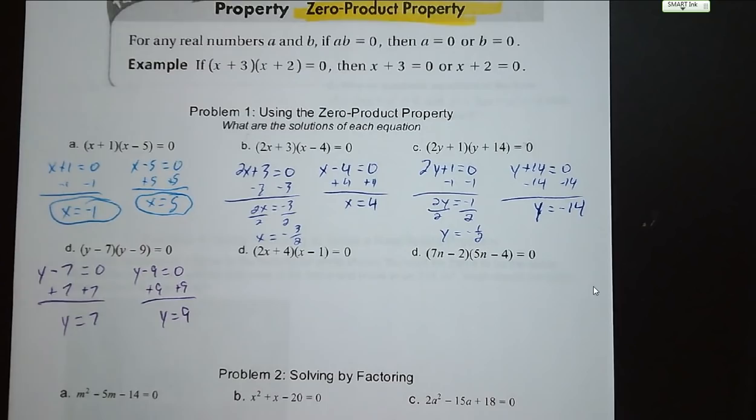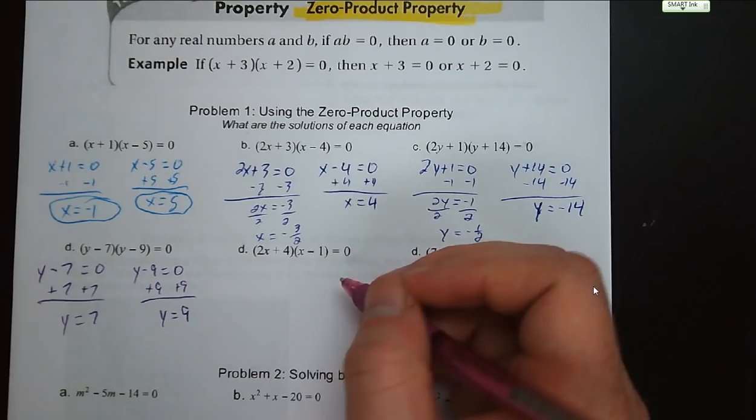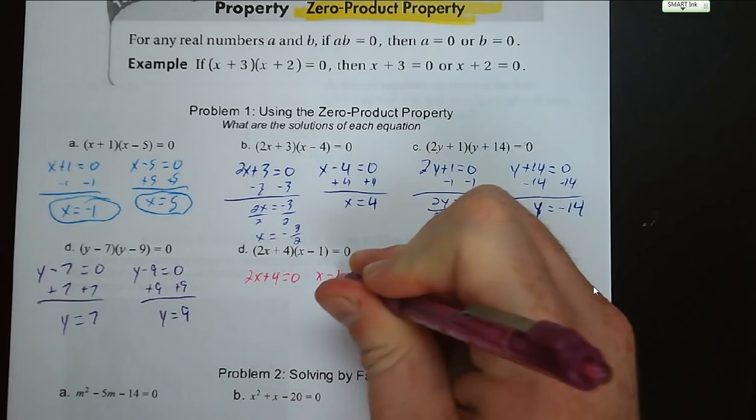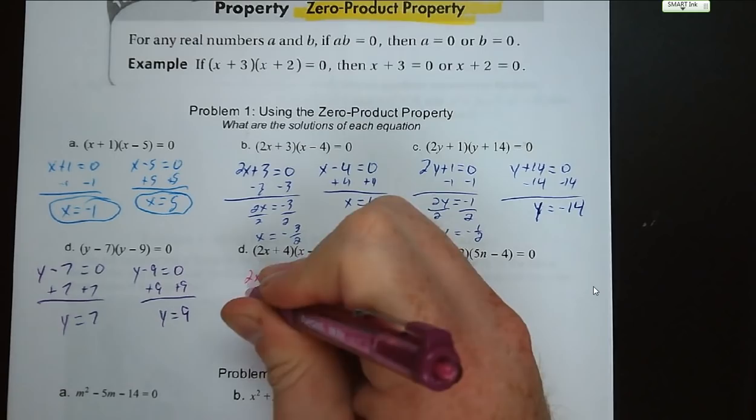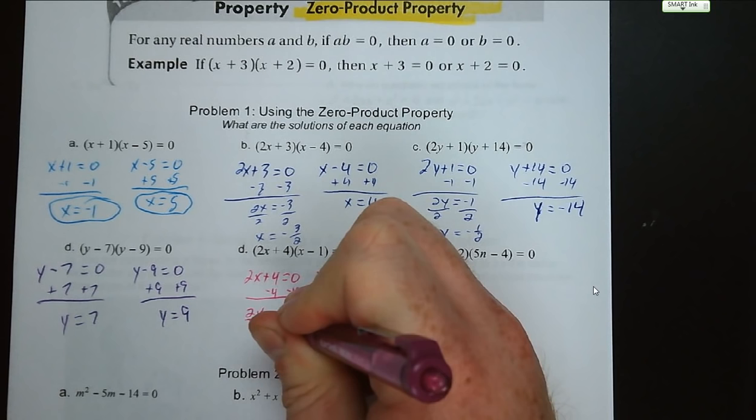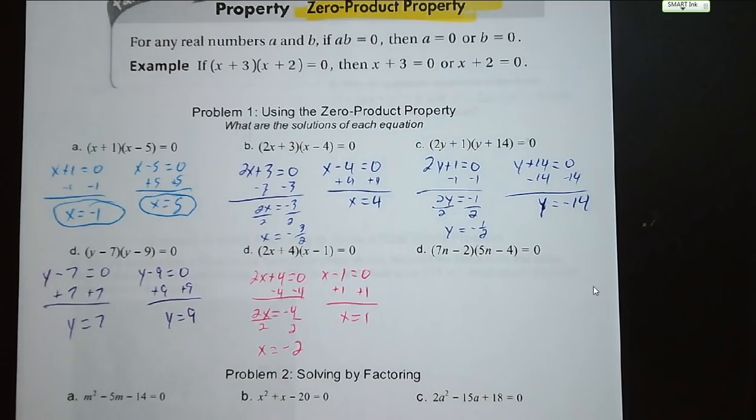Letter D: 2x plus 4 and x minus 1. So 2x plus 4 equals 0 gives 2x equals negative 4, divide by 2, x equals negative 2. And x minus 1 equals 0, add 1, x equals 1. So your two solutions are negative 2 and positive 1.